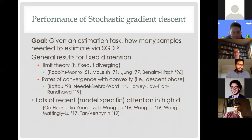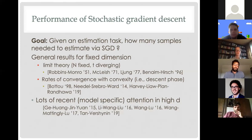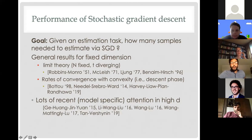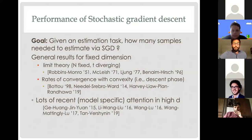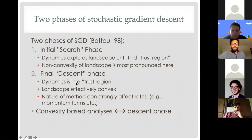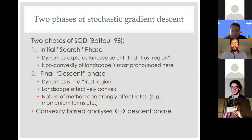More recently, a lot of people started focusing on the high dimensional perspective where the standard results don't immediately apply. There have been many model-by-model results in this direction. What we want to talk about is the high dimensional setting, and our hope is to develop a general framework in terms of geometric or analytical properties of the loss landscape. Before stating what we study specifically, let's think about what stochastic gradient descent does.